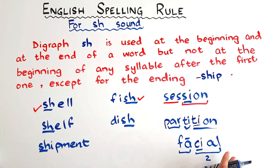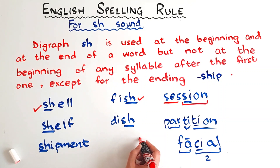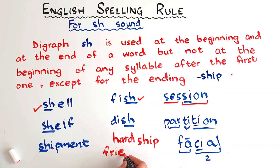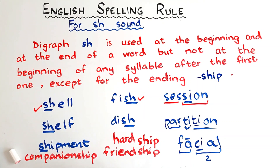But it is not over yet. There is something more: if you ever hear the SH sound at the beginning of any syllable except the first one, you can write it with SH provided the syllable is '-ship.' For example, 'hardship,' 'friendship,' 'companionship,' and so on. This is the only way you can write the SH digraph as the SH sound at the beginning of any syllable except the first one.